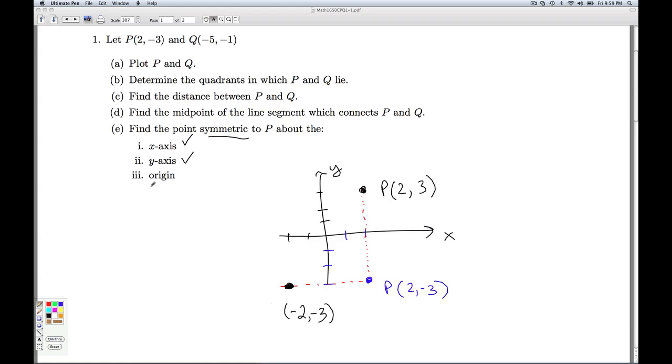Last but not least, we need the origin. How do we reflect something through the origin? Well, you can think of reflecting through the origin as reflecting across the Y axis, and then reflecting across the X axis, or vice versa, reflecting across the X axis, then reflecting across the Y axis. No matter which procedure you choose, you're going to end up here, at the point (-2, 3). So to reflect something through the origin, you take the opposite of both the X value and the Y value.